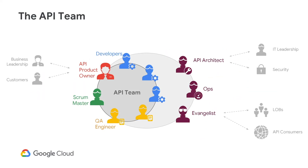A core part of agile is to have one cross-functional API team. This means the API team should be largely self-sufficient with as few dependencies as possible. Here's what the agile API team would look like. The core API team is in the middle, with one team made up of the API product owner, API developers, QA engineers, and scrum master in the inner ring.